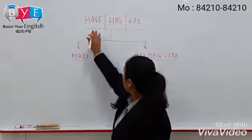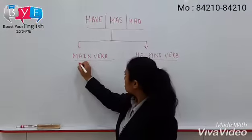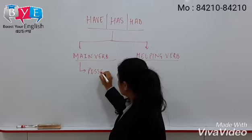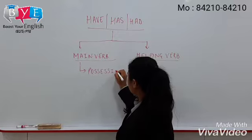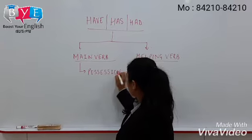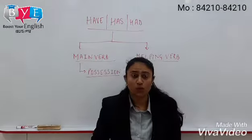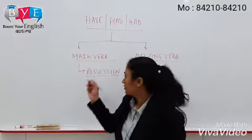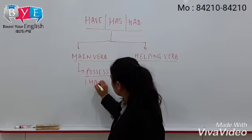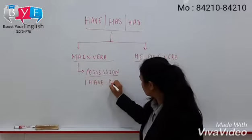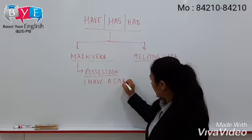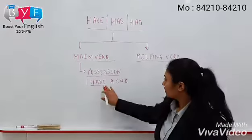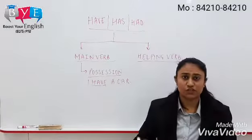As a main verb, verb 'have' is used to show possession — the position of a thing, or anything that you can hold, touch, grab, or feel. Like: 'I have a car.' Here, verb 'have' is the only verb. It shows that I have a car. It shows possession.